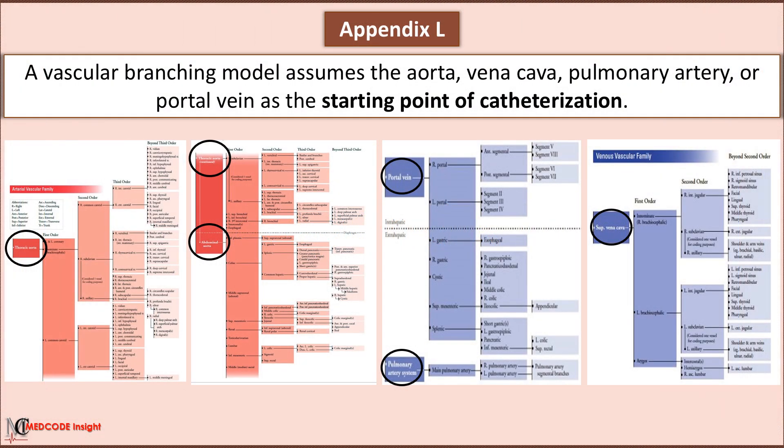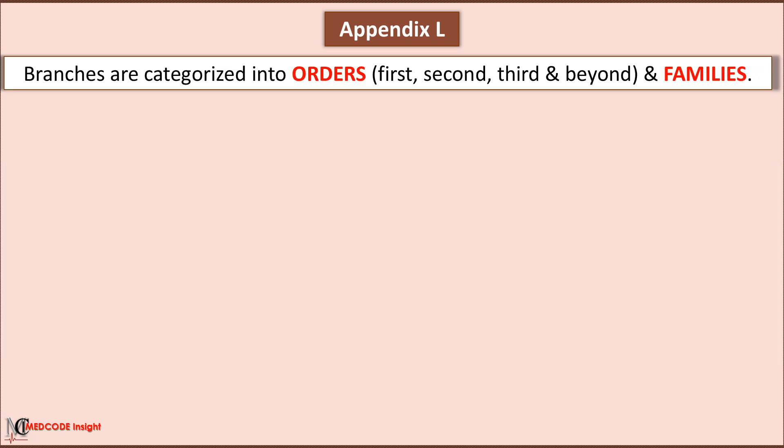Appendix L is a vascular branching model that assumes the aorta, vena cava, pulmonary artery, or the portal vein is the starting point of catheterization. In a vascular family, branches are categorized into orders and families, and an order can be first, second, third, and beyond.